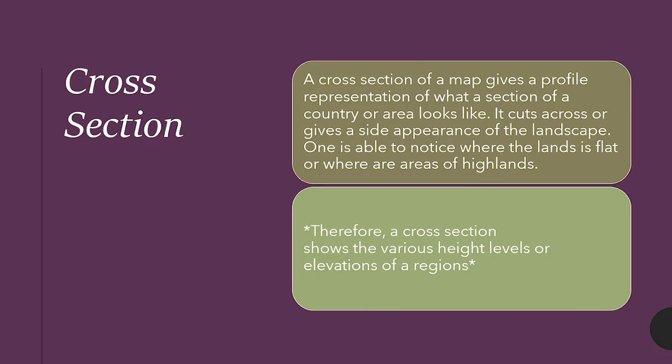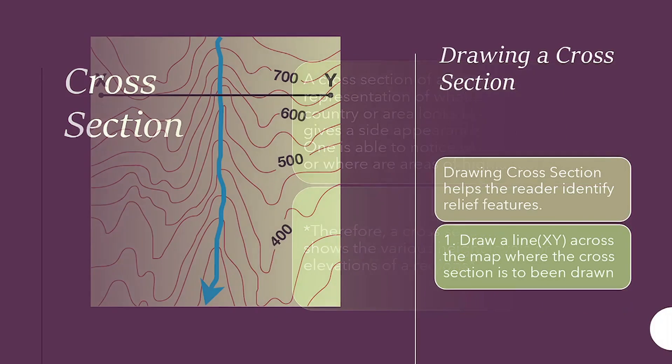Cross-section. A cross-section of a map gives a profile representation of what a section of a country or area looks like. It cuts across or gives a side appearance of the landscape. One is able to notice where the land is flat or where areas of highlands are. Therefore, a cross-section shows the various height levels or elevations of a region. Drawing a cross-section helps the reader identify relief features, drainage patterns, as well as contour links and features that go along with that.